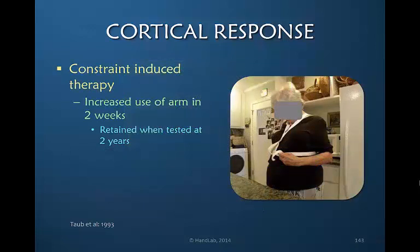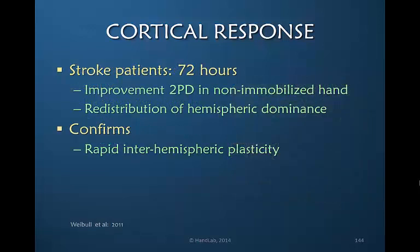With constraint-induced therapy, in just two weeks of constraining the uninvolved side and demanding greater use of the involved arm, patients were able to demonstrate significant improvement in function which they retained when tested two years later. Two weeks of input was retained two years later — most likely because the patient was now able to increase use of the arm, which sustained that improvement.